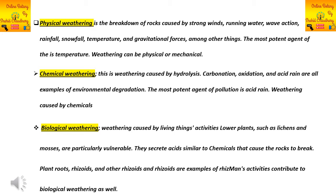Chemical weathering is important for MCQs and often repeated in exams. Chemical weathering is caused by hydrolysis, carbonation, oxidation, and acid rain — all of which are examples of chemical processes. Acid rain is a very important agent of chemical weathering.